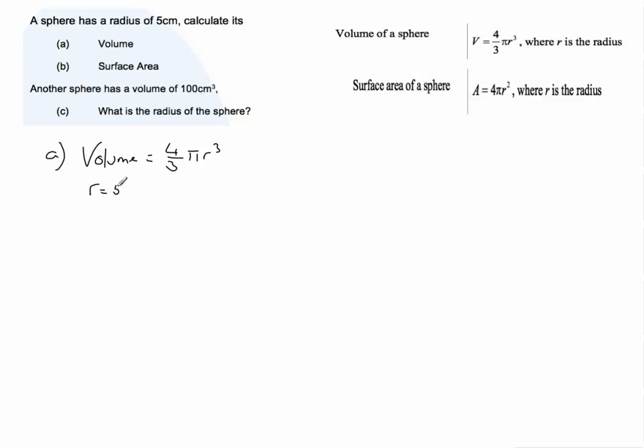A is volume is equal to four thirds pi r cubed. So all we need to do is substitute r equals five into that formula. And at that point, we need to make sure we're aware of our priority of operations. So it's going to be four thirds times by pi times by five cubed.